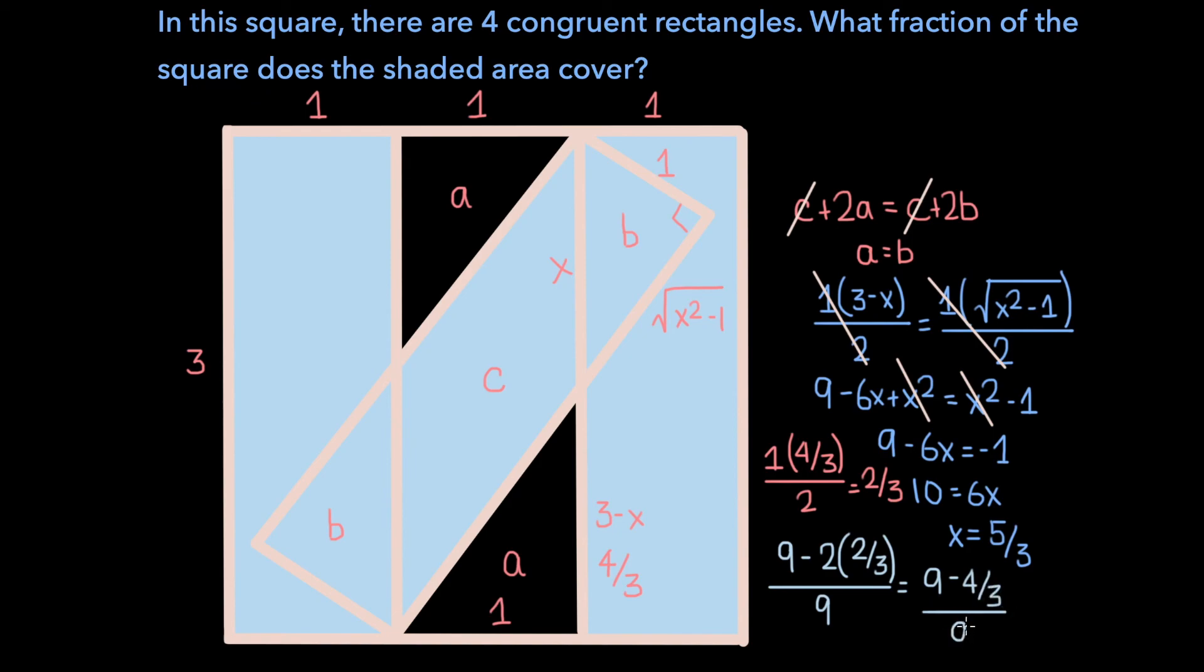And so if we simplify this further by dividing each of the terms in the numerator by 9, we get 1 minus 4 over 27, which is 23 over 27. And so the fraction of the square that the shaded area covers is 23 over 27.